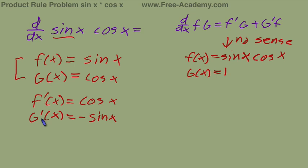Now that we have f, g, f prime, and g prime, we can add these into our formula. So our first term is f prime times g. f prime is cosine of x, and g is cosine of x.